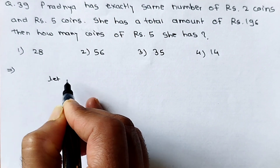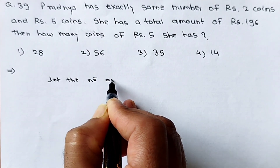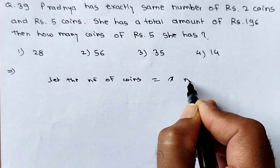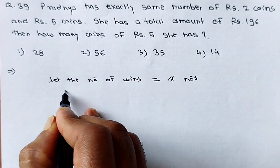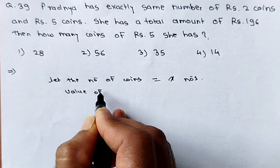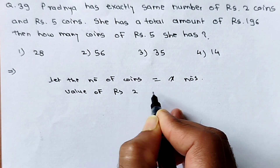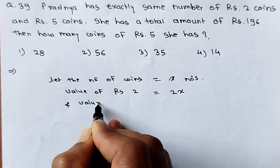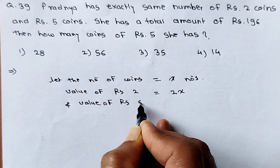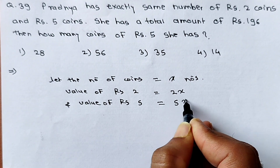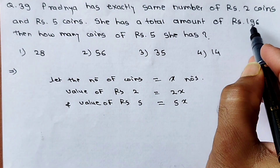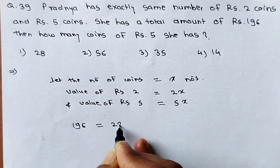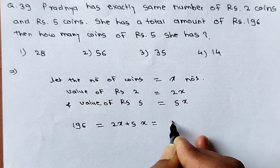The value of rupees 2 coins will be 2x and the value of rupees 5 coins will be 5x. The total is 196 rupees. So 2x plus 5x equals 196, which gives 7x equals 196.